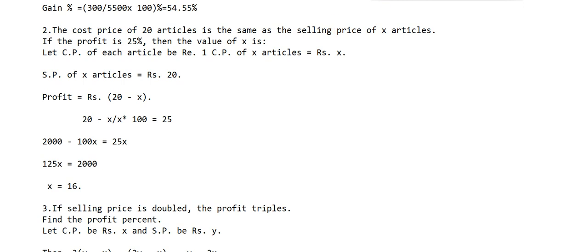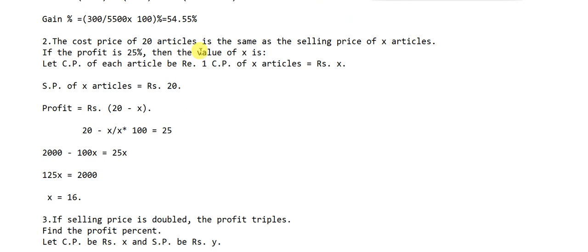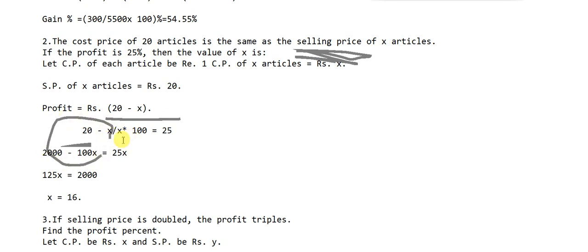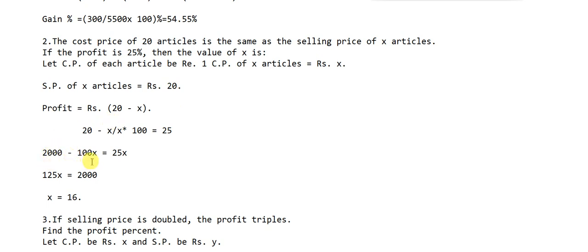Profit = SP − CP = 20 − x. Profit percent = (20 − x) / x × 100 = 25. Solving: 2000 − 100x = 25x, so 125x = 2000, giving x = 16.